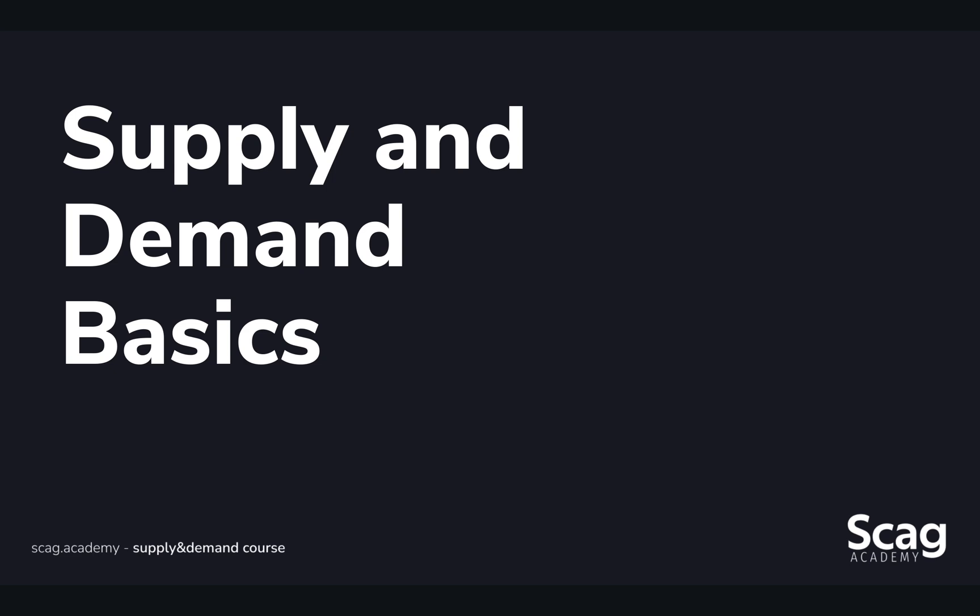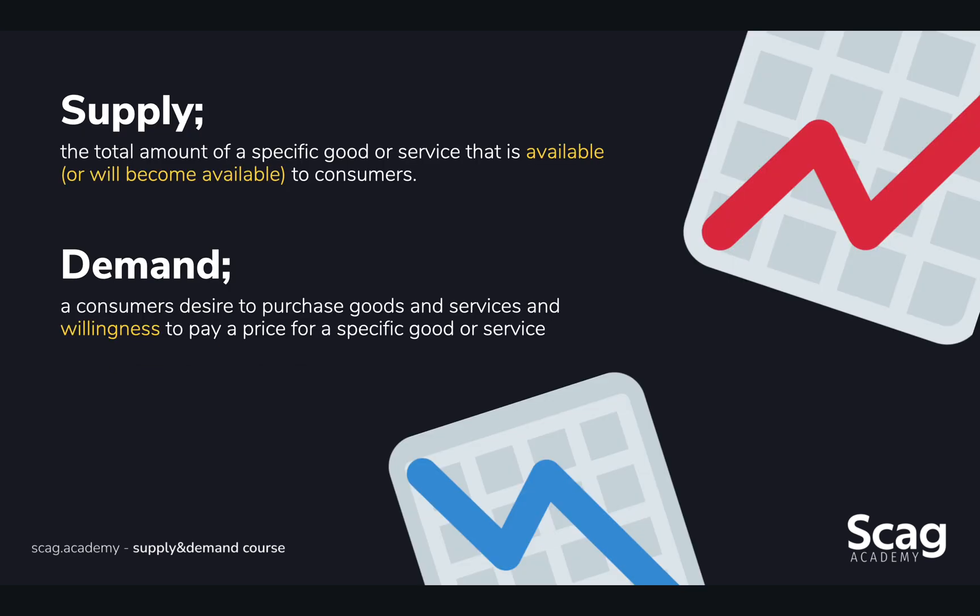Supply is just going to be the total amount of a specific good or service that is available or will become available to consumers. Let's say there's a store down the street that sells eggs and they have a hundred eggs — that's the supply. They have a supply of a hundred eggs.